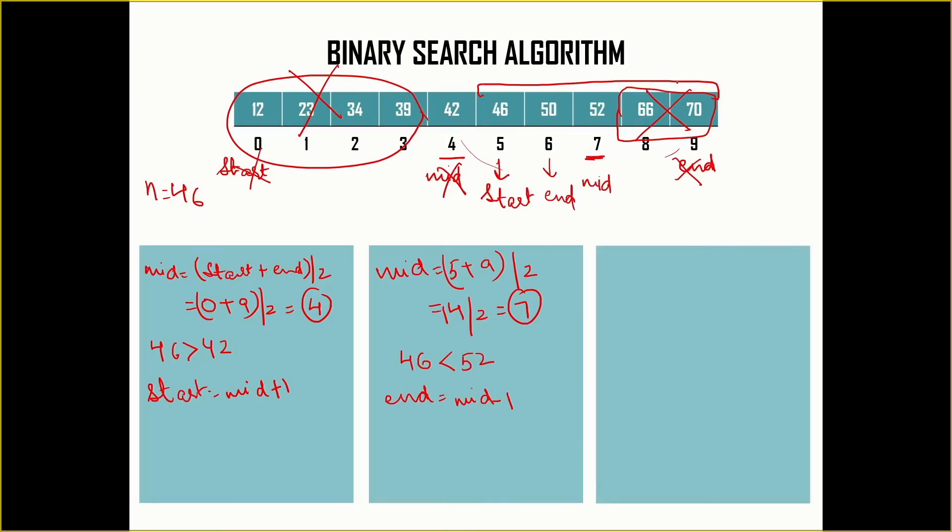Now in the last step, the start is at 5 and the end is at 6. We have logically divided our list into two halves again and again, and this is where I am looking for my element. I am going to calculate mid again, which is 5 plus 6 divided by 2, that is 11 divided by 2. I get 5.